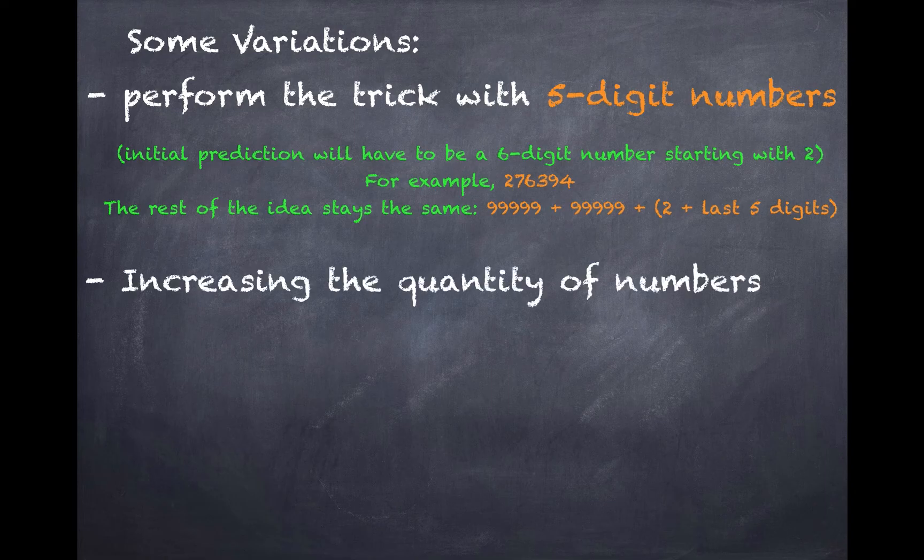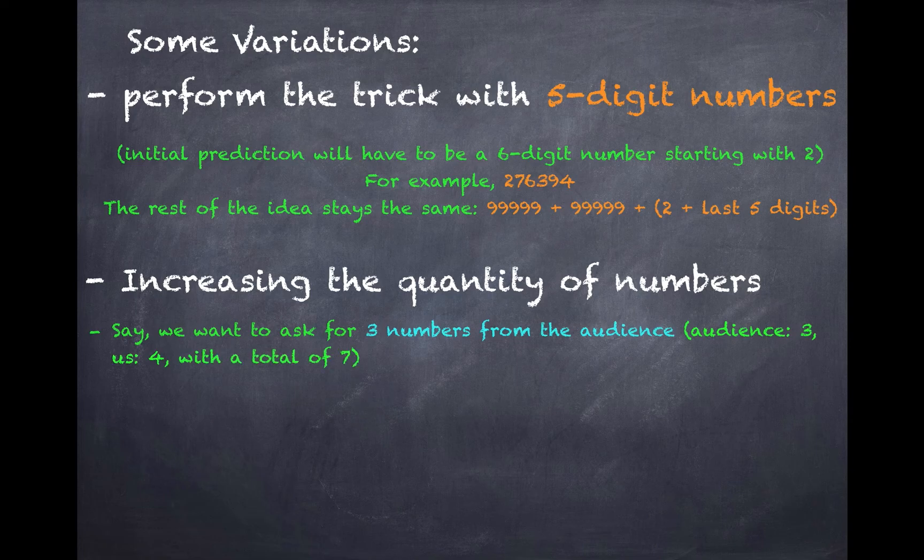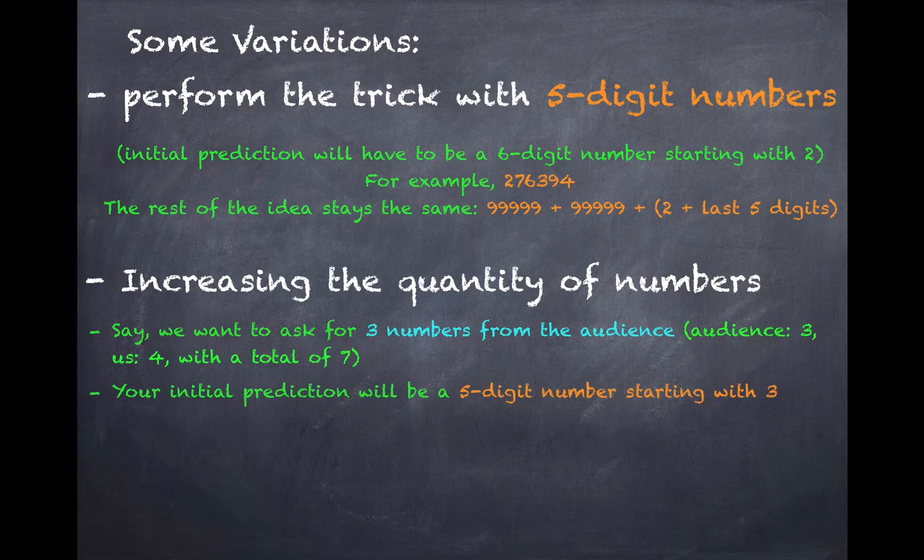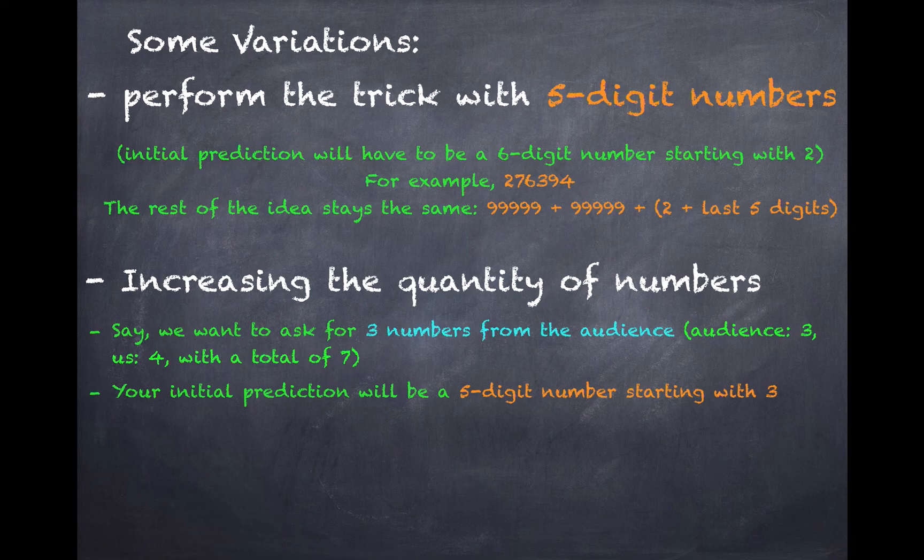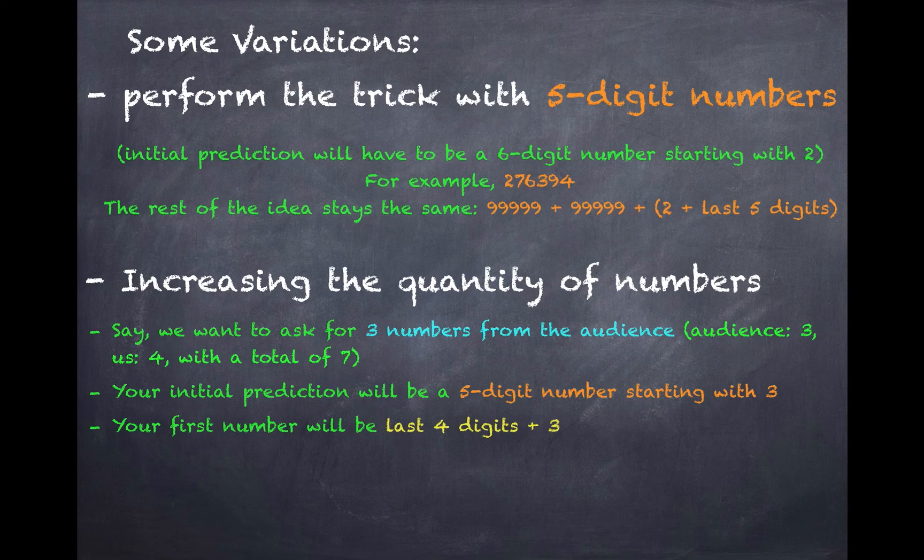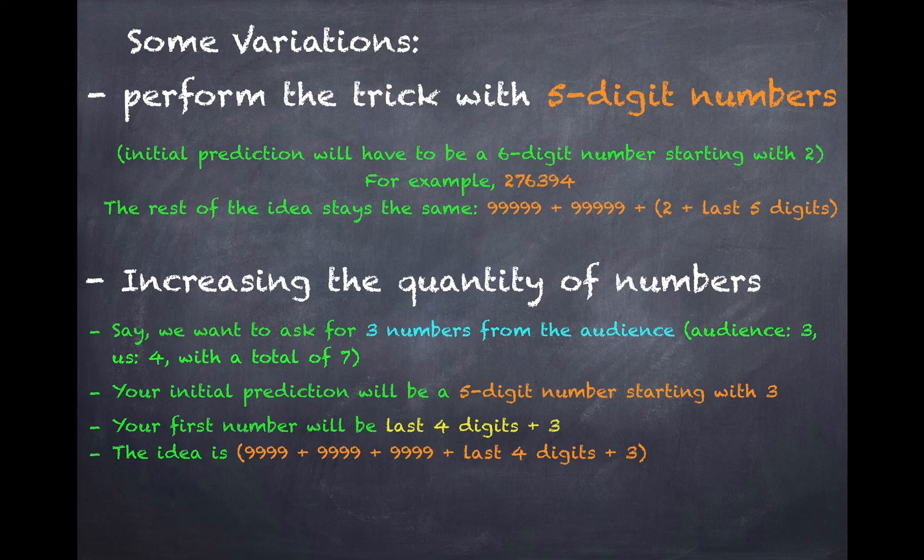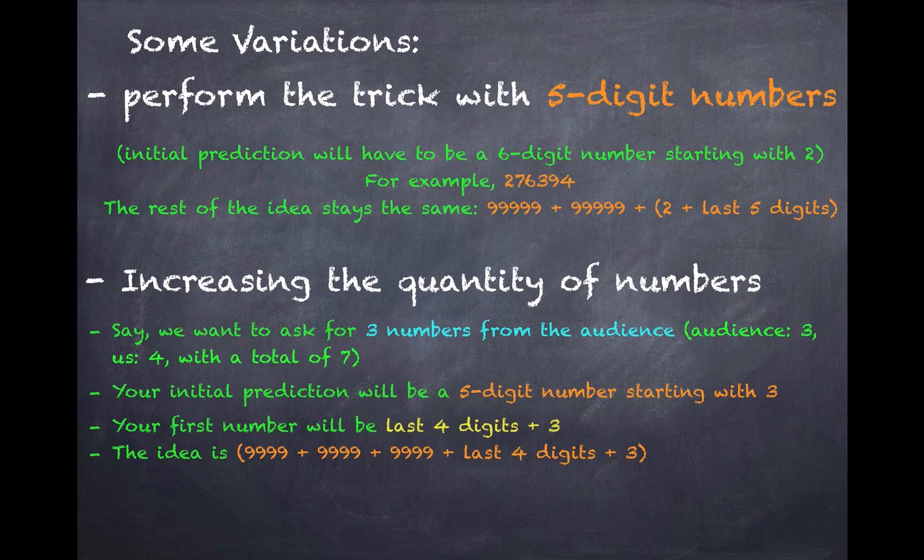So let's say you can also do this trick by increasing the quantity of numbers. So if you want 3 numbers from the audience, that would make a total of 7. We need to predict a 5-digit number starting with a 3 instead of a 2, and our first number will be last 4 digits plus 3 instead of 2. Why? Because the idea is we're adding 9999 three times, so we are 3 short of 30,000, which we compensate by adding to the first number.